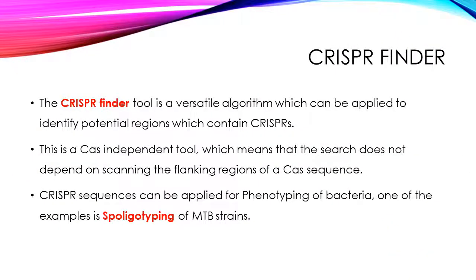One of the useful tools available online is the CRISPR Finder. CRISPR Finder will look for repeat regions which it identifies as CRISPR sequences based on comparison to existing databases. CRISPR Finder is an independent tool, meaning the search does not depend on scanning the flanking regions of a cache sequence. It looks for independent repeat regions which are palindromic.